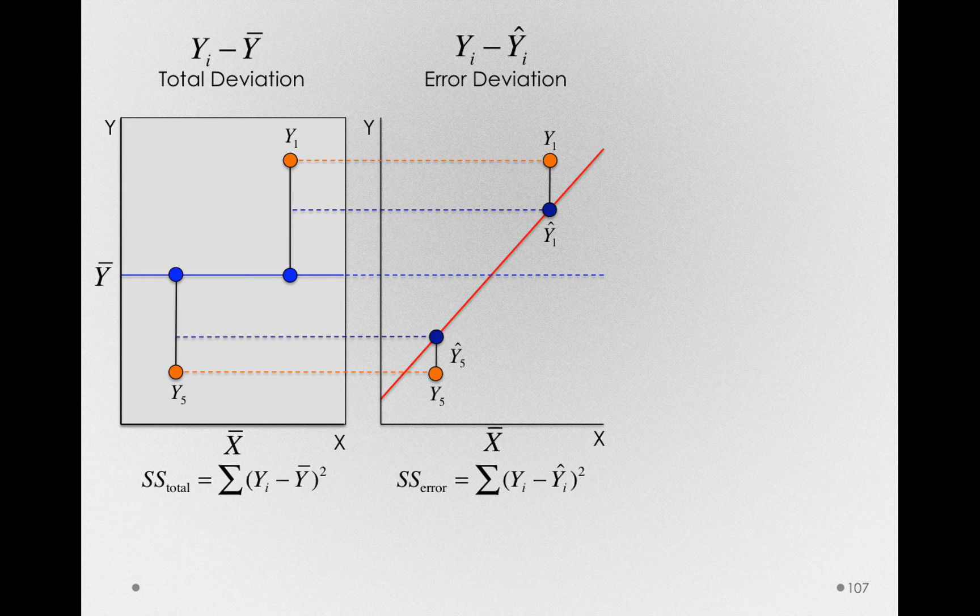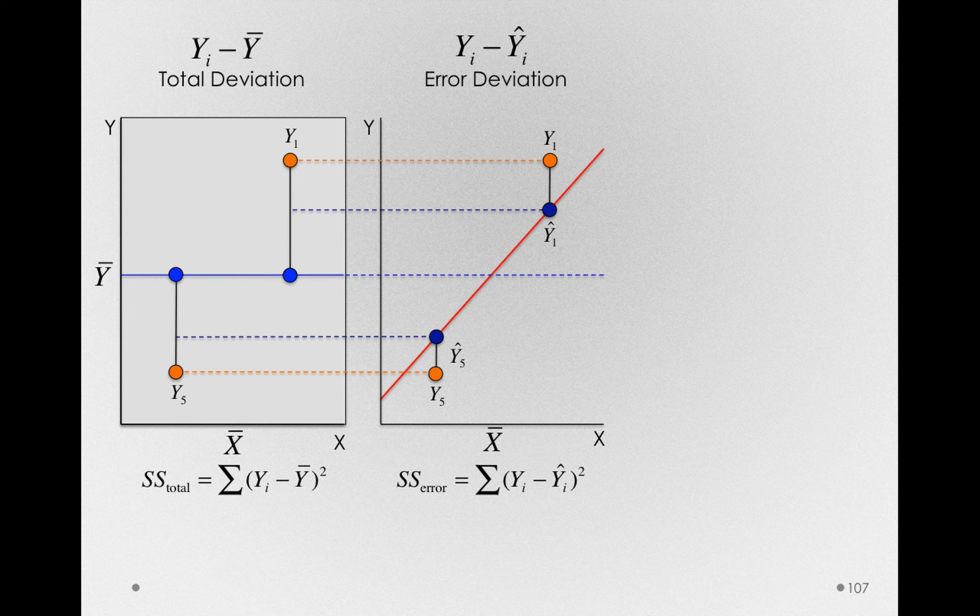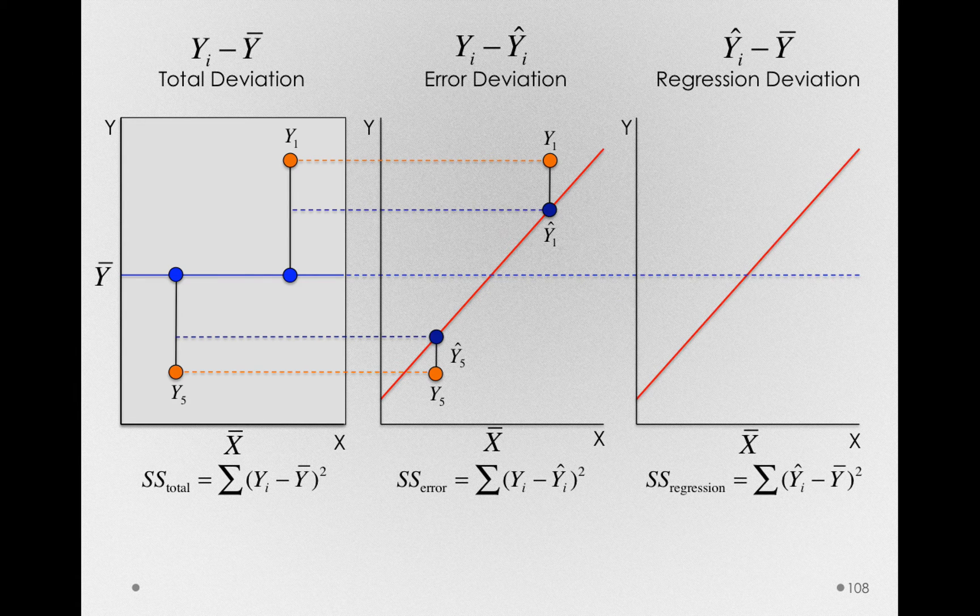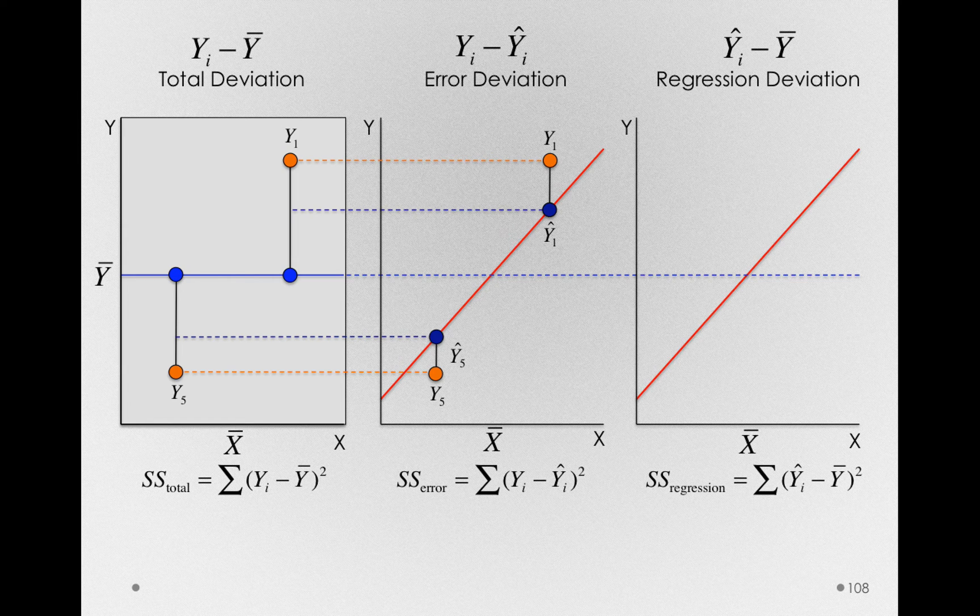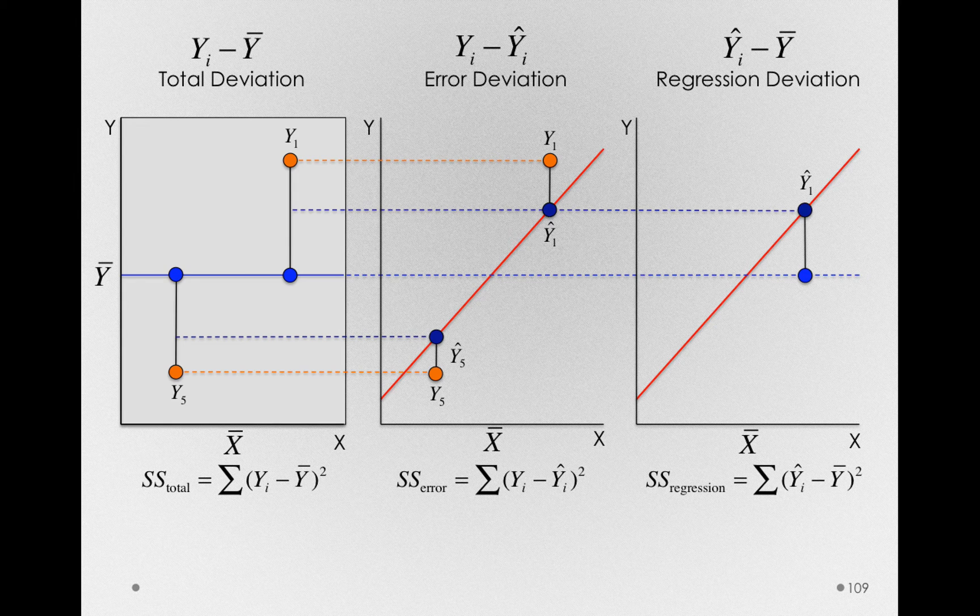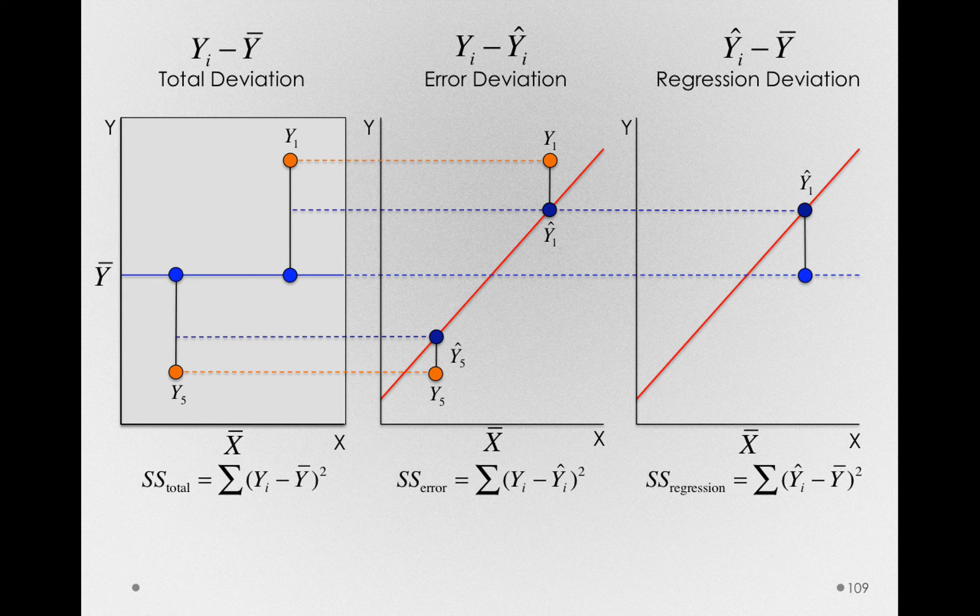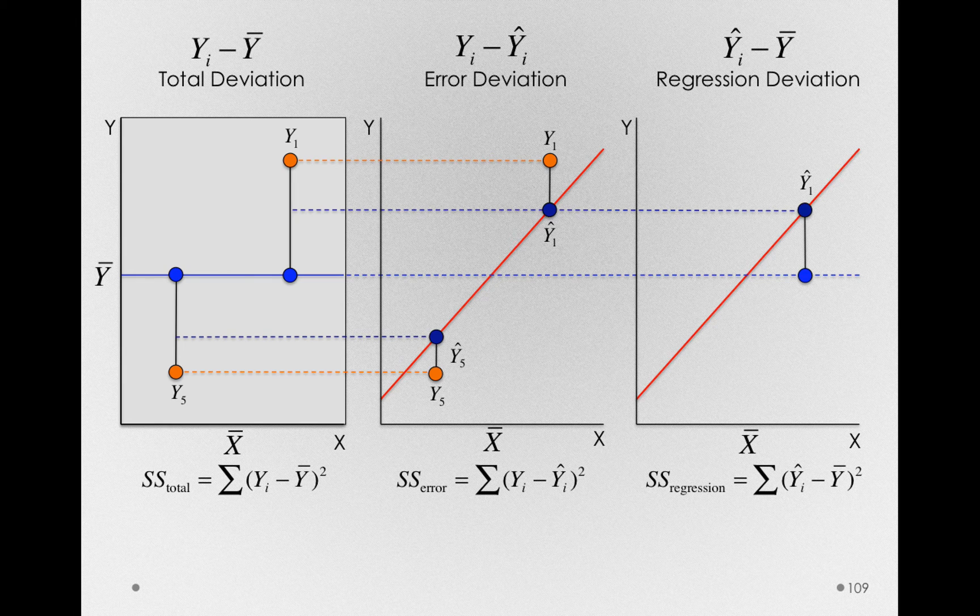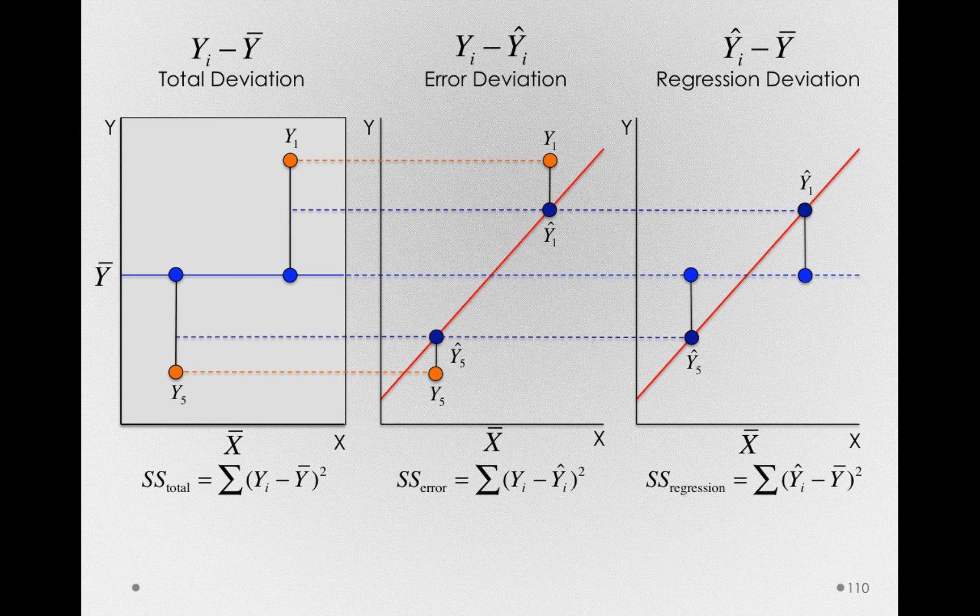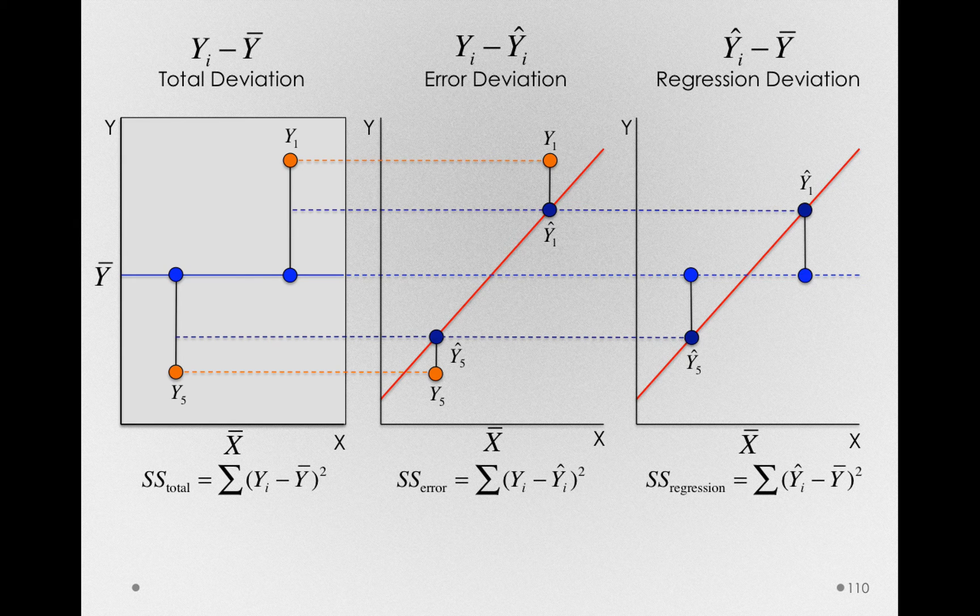So we have two parts of our model so far, the total deviation, and we've broken out the error deviation. So what we have left is the regression deviation. And notice that this deviation will be between what's predicted by the line and the grand mean. So for Tom, Tom's deviation for regression is the degree to which this line is above the grand mean. And for Gloria, Gloria's deviation will be the degree to which the line is below the grand mean.